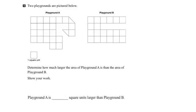And we're also shown that each of the squares is the equivalent of one square unit. Well, let's start with Playground B because it is a little simpler diagram than Playground A.